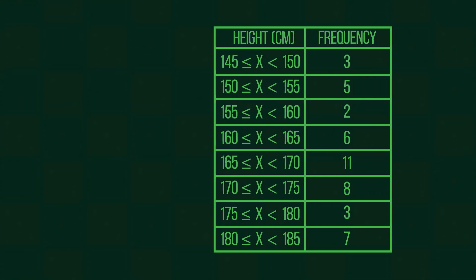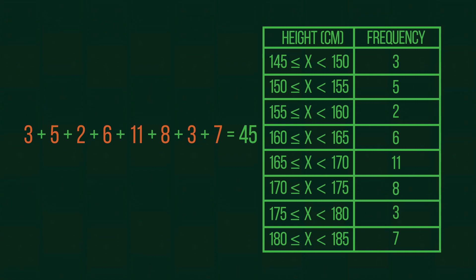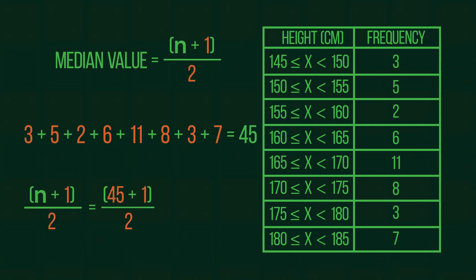How did you do? First, we need to find the total frequency in our table. There are 45 values in this table. We then apply this value as n in our median equation. 45 add 1 equals 46, divided by 2 equals 23. So our median value is the 23rd position.